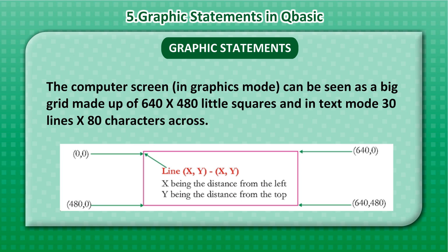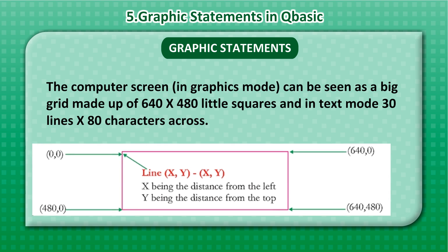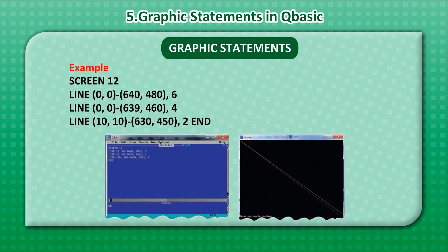In the LINE statement, x is the distance from the left and y is the distance from the top. Example: SCREEN 12 — LINE (0, 0)-(640, 480), 6. LINE (10, 10)-(630, 480), 2. END.